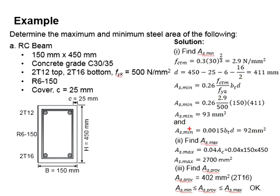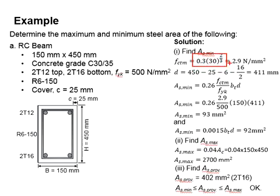This number is due to the concrete grade — different grades will have different numbers. You need to substitute the equations or you may refer to Table 3.1 for grade 30. From that, you will get fctm equals 2.9.